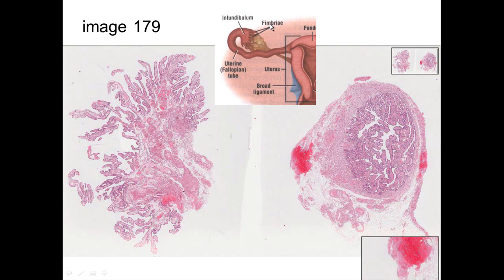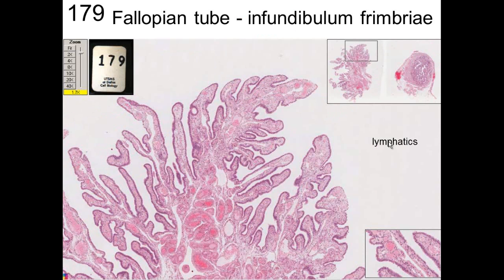The fimbria — those little finger-like projections — move and facilitate the egg going in. If they were somehow stuck down and couldn't move, they would impede their ability to take the egg in. Also, you have ciliated cells in the oviduct itself all along the way through the fallopian tube — they need to be ciliated to move the eggs along, and also the sperm along.